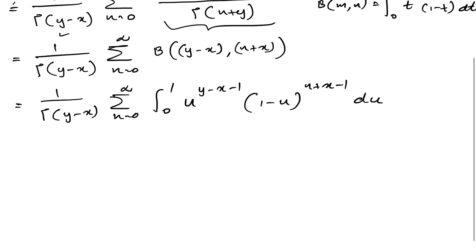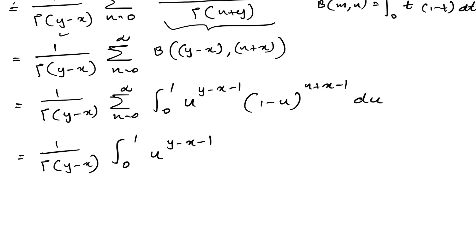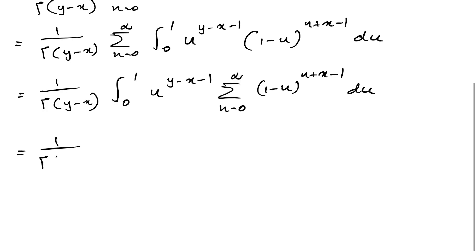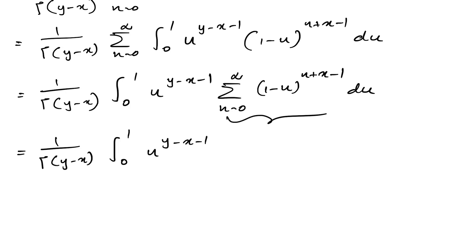So we have 1 over gamma(y-x). Now we can interchange the integral and sigma notation. So we have the integral from 0 to 1 of u^(y-x-1) times the sum from n equals 0 to infinity of (1-u)^(n+x-1) du. Then 1 over gamma(y-x) times the integral from 0 to 1 of u^(y-x-1) times the summation, which we can convert to (1-u)^(x-1) over u, du.